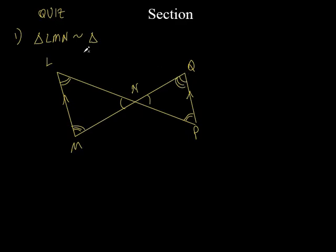So let's see. If I go L-M-N, what order did I go? I went two arcs, then three arcs, then one arc. So I went 2-3-1 in the way that I drew it out. You didn't have to draw it exactly like this with the arcs. So I've got 2-3-1. What am I going to do over here? I'm going to go 2-3-1. So what do I got? P-Q-N. Is that right? Yep.